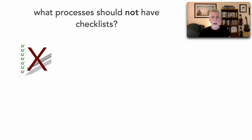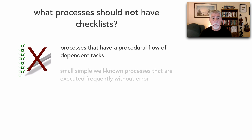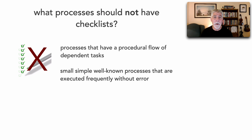Which processes should not have checklists? Not everything should be a checklist. Processes that have a procedural flow of dependent tasks do not belong in a checklist — that's a series of steps. Also, small, simple, well-known processes that we execute frequently without error don't need checklists. We're developing software, and some of that may be extremely critical or it may be a business application, but not every procedure needs a checklist.